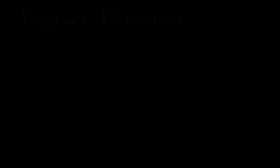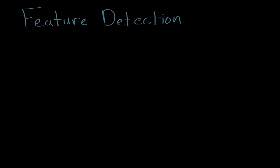When you're looking at an object, it's necessary to break it down into its component features in order to make sense of what you're looking at. This is known as feature detection. There are many components that make up feature detection, so let's go into these.